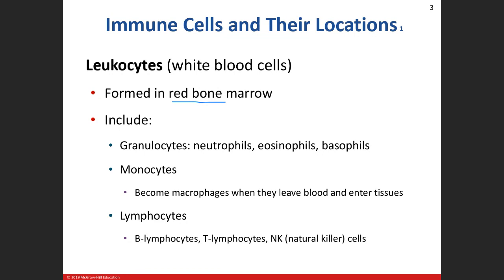The granulocytes are the cells that have the little granules inside — when we stain them we see these little dots all throughout. Those granules help them with their immune function because a lot of times those granules play a role in enzymatic reactions, or they're chemicals that kill things. The monocytes are what we call macrophages when they're circulating in the blood. When they move from the blood into tissue, that's when we call them a macrophage.